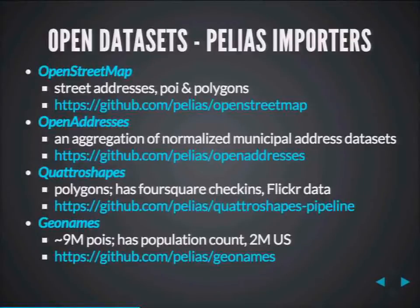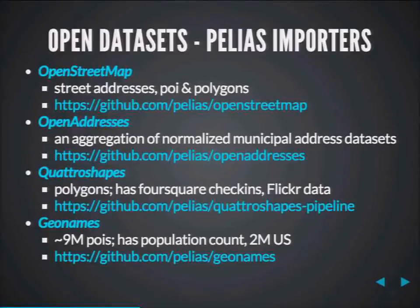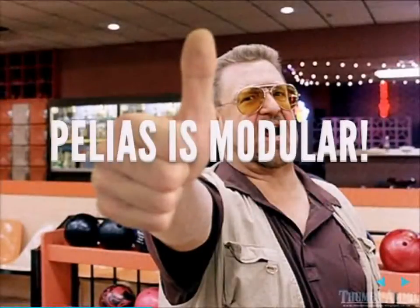The GitHub links are throughout the presentation because I want you to go check them out, comment, discuss, and code review. We have a bunch of Pellius importers, and the reason we could write them fairly quickly is because Pellius is modular. Each importer uses Pellius's input pipeline modules, so writing one is fairly easy — you only need to implement a way to extract data from your dataset, then run it through a series of modules using streams.